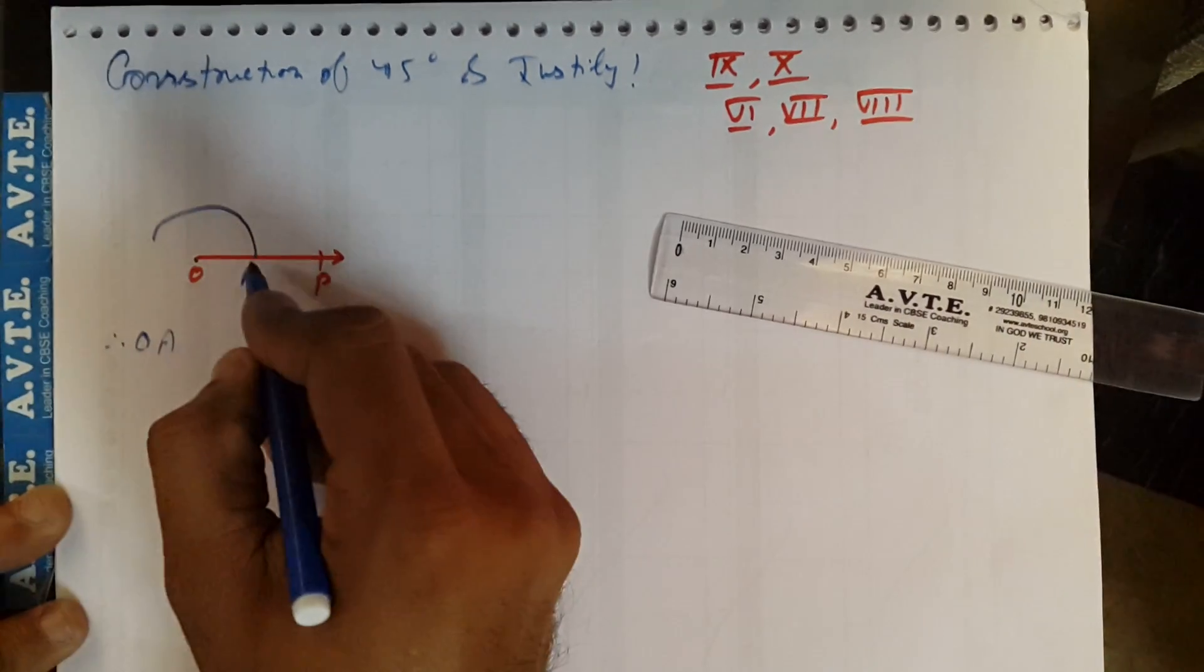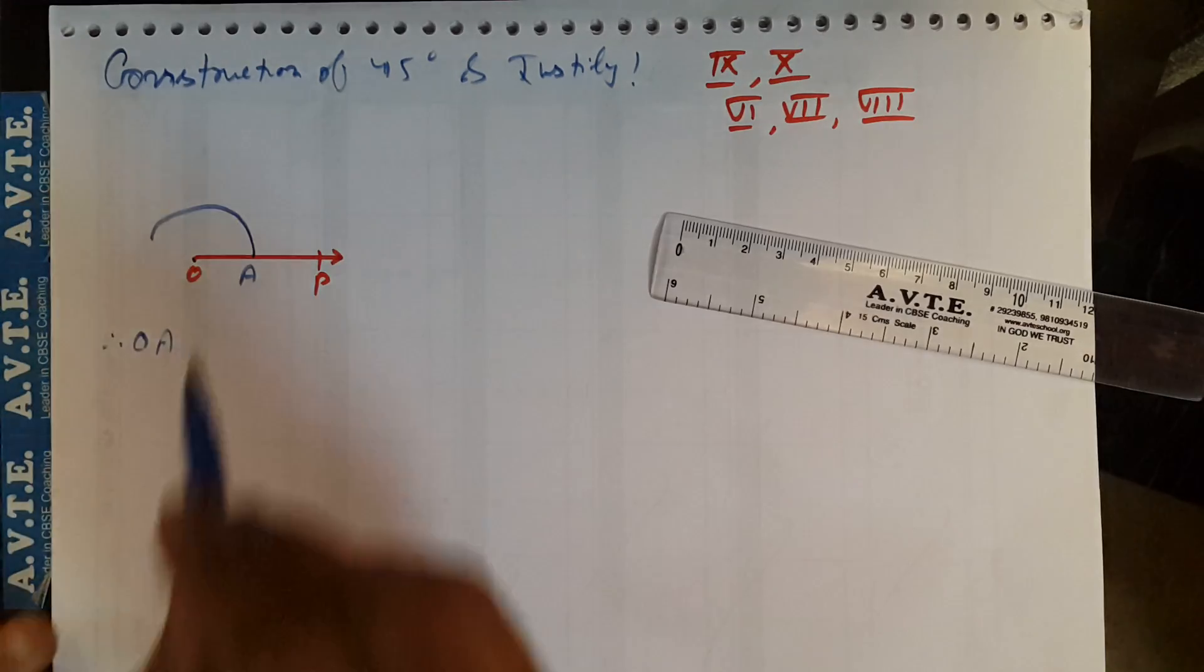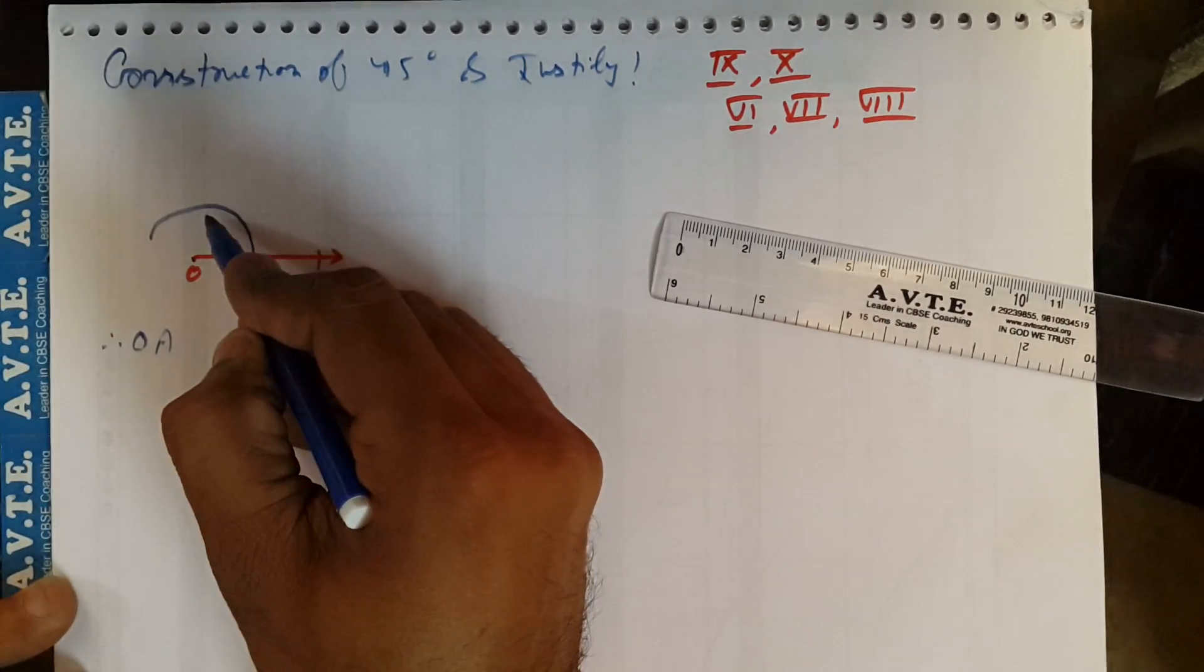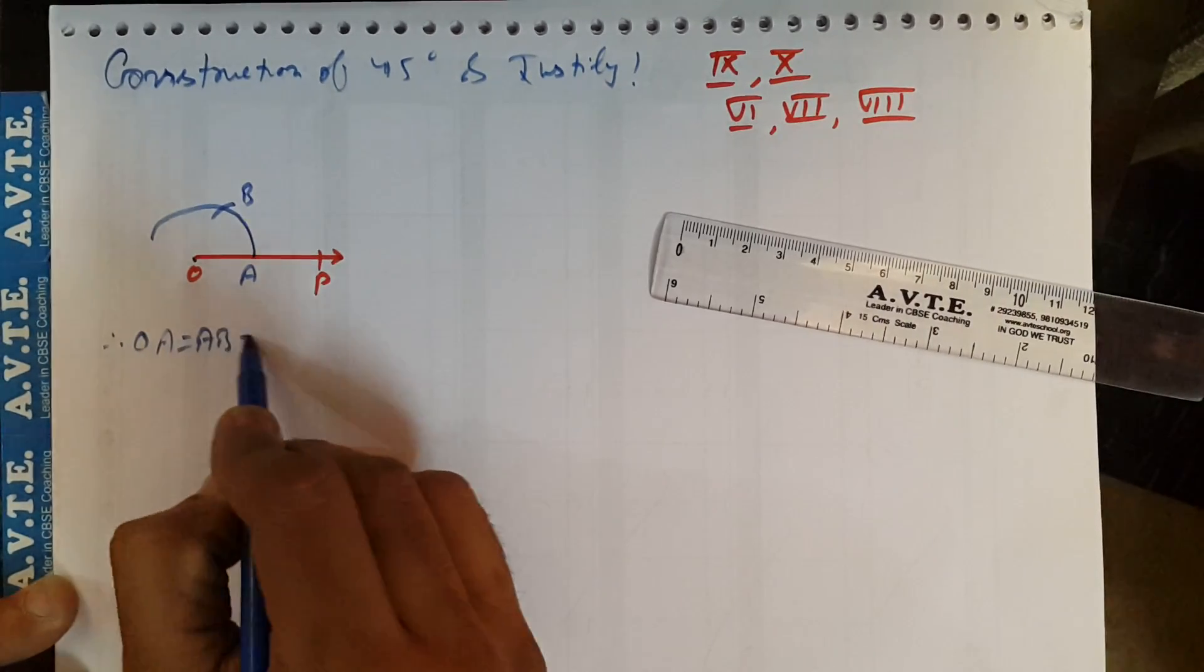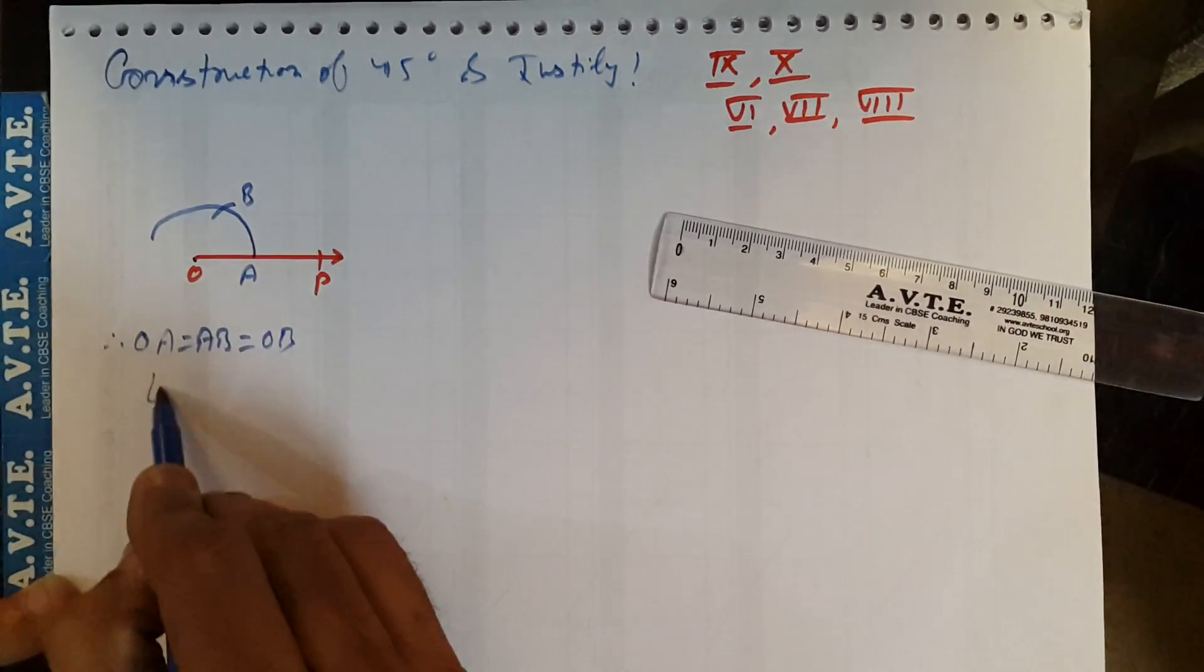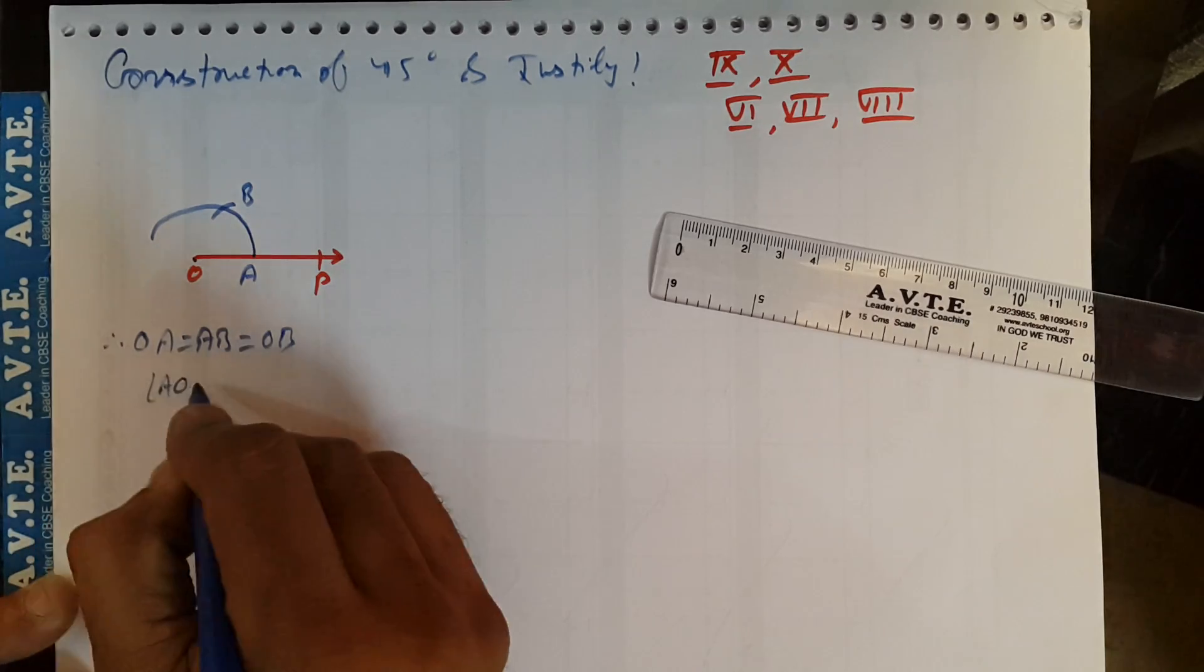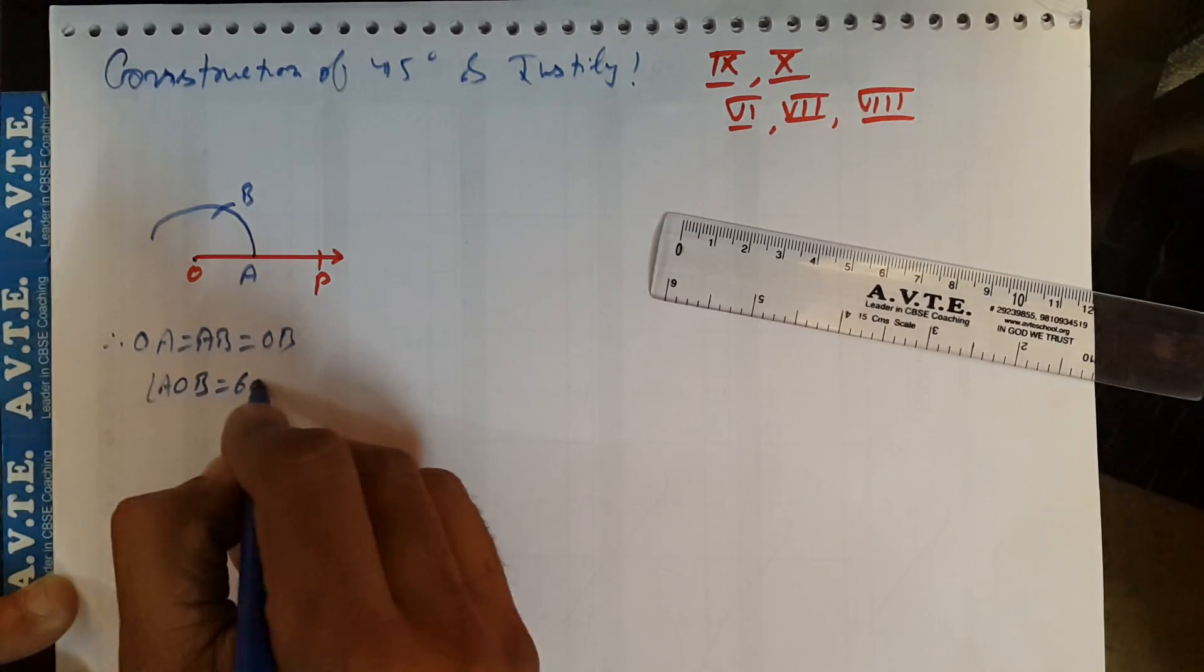Then whatever is OA, you just put compass here, cut an arc. That is equal to AB and which is equal to OB also. So your angle AOB is 60 degrees.